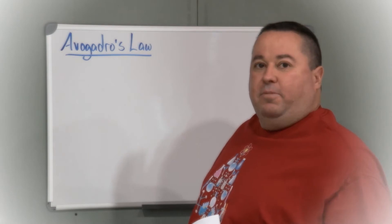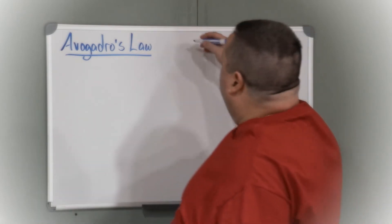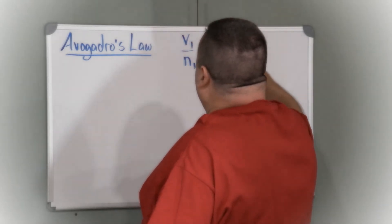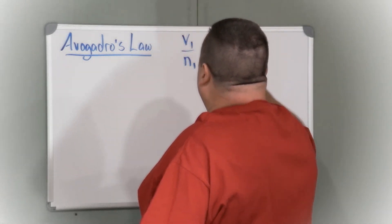This is an Avogadro's law problem, so Avogadro's law is V1 over n1 equals V2 over n2.